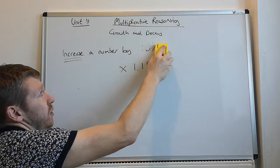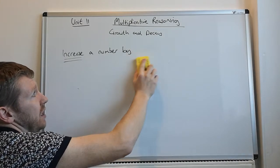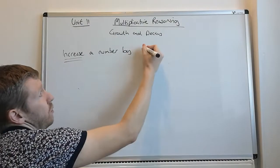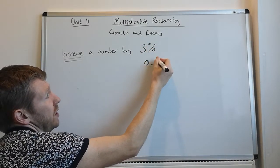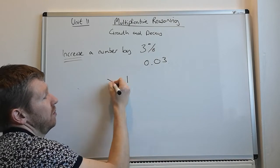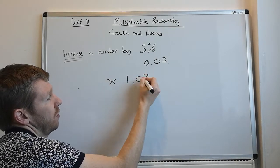One to be careful of, if it's something like increase by 3%, remember that 3% is 0.03, so it's times by 1.03.